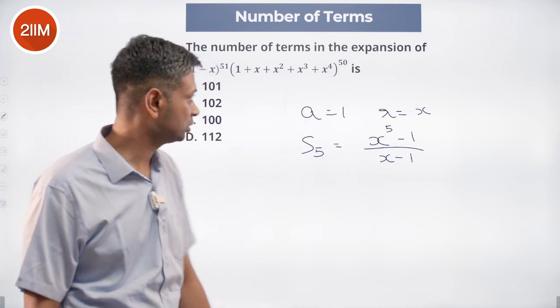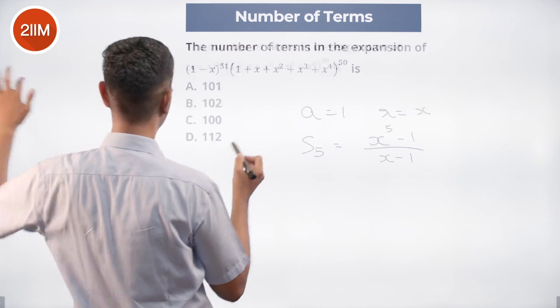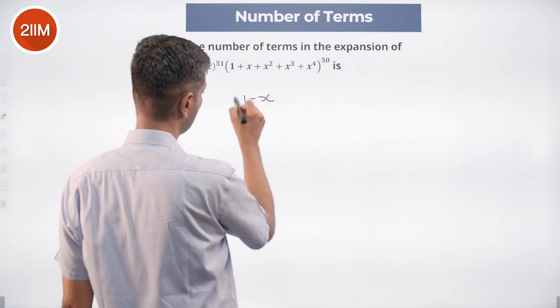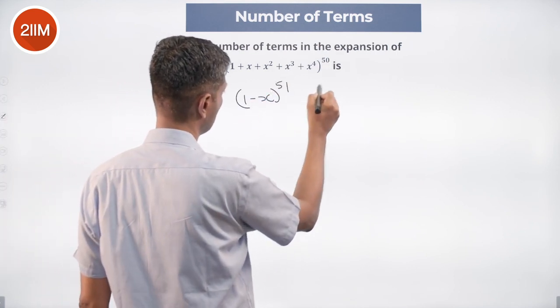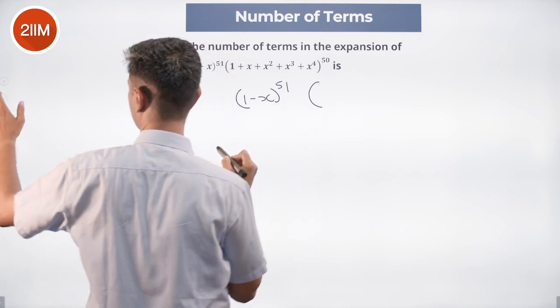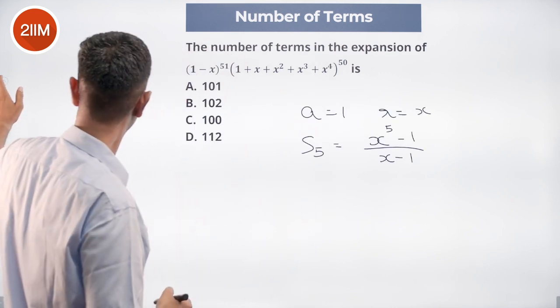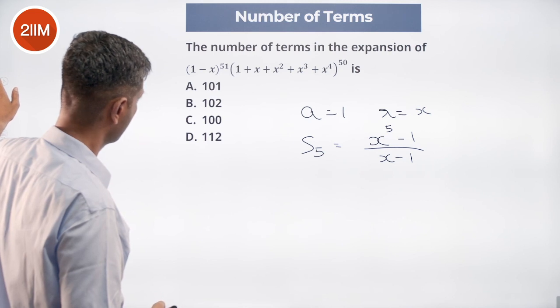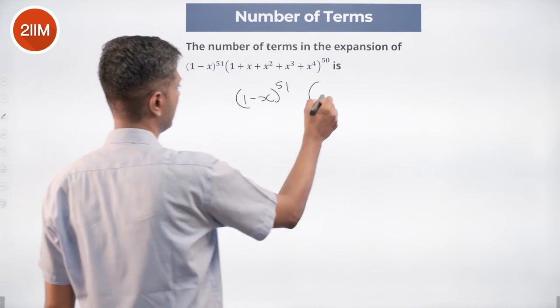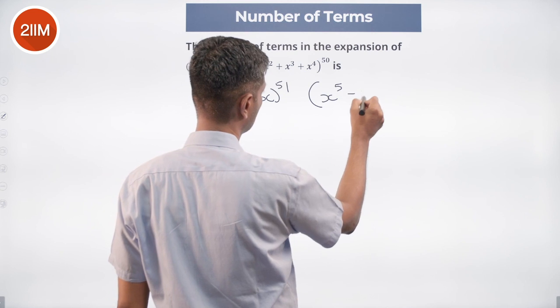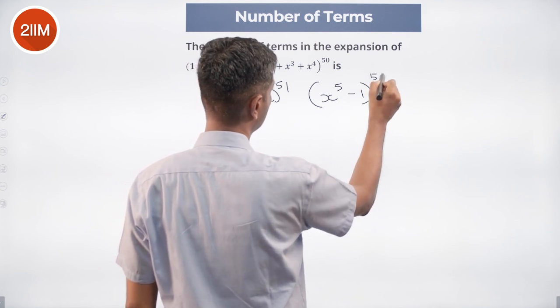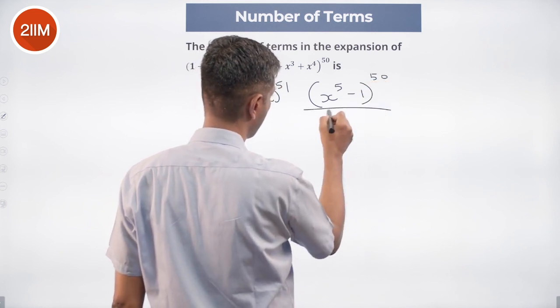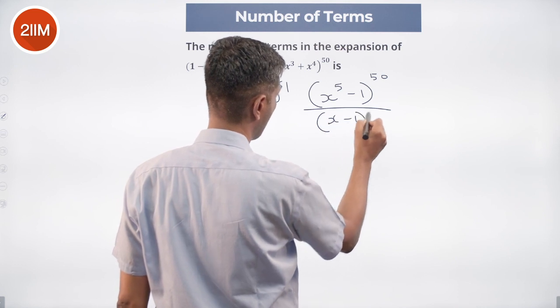which is brilliant because now I can reimagine this whole thing as 1 minus x power 51 into x power 5 minus 1 power 50 by x minus 1 power 50.